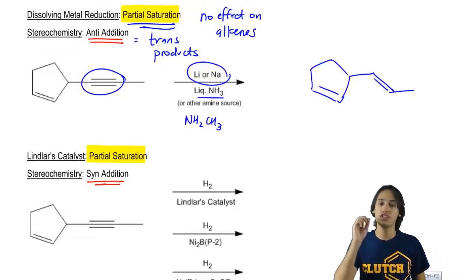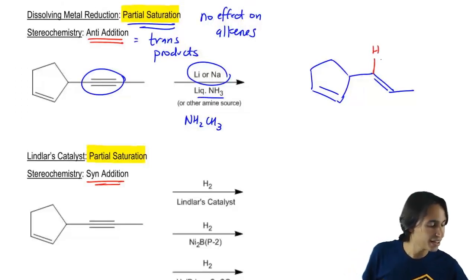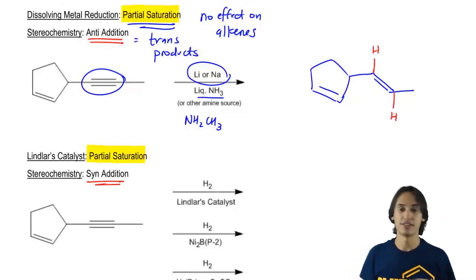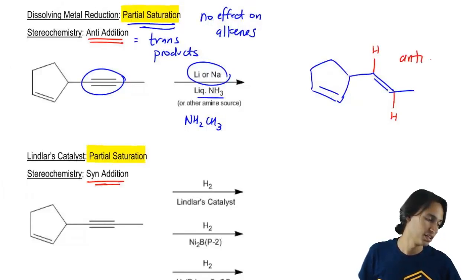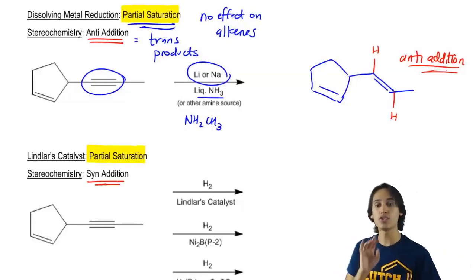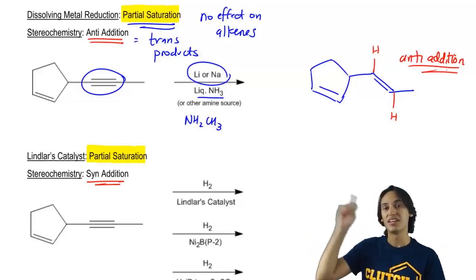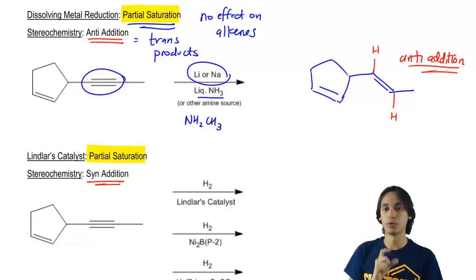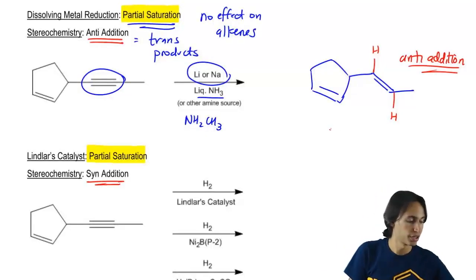What that means is that I should actually draw the double bond in a trans position. Why? Because the two hydrogens that I added must have added on different sides. I have different sides of the double bond which means that they were anti-addition. Is that making sense? What that means is that dissolving metal reduction is important because this is a way that we can turn triple bonds into trans double bonds.